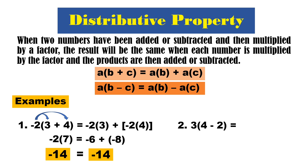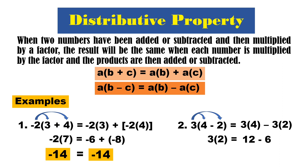Next example: we have 3 times the quantity of 4 minus 2. Distribute positive 3 — that is 3 times 4 minus 3 times 2. Simplify inside the parentheses first: 4 minus 2 is 2, so we have 3 times 2 equals 6. Then 3 times 4 is 12 minus 3 times 2 is 6, and 12 minus 6 is 6. Equal!